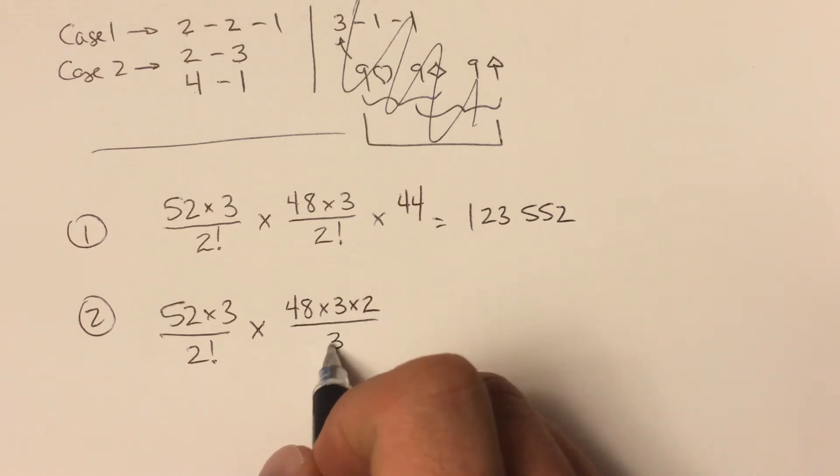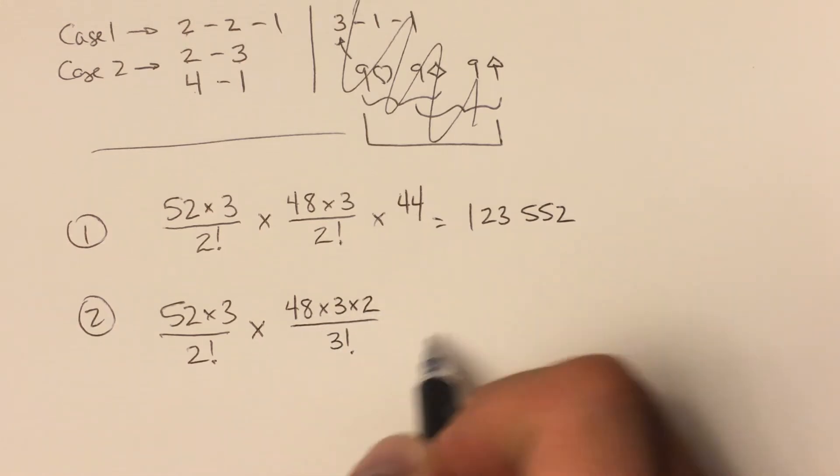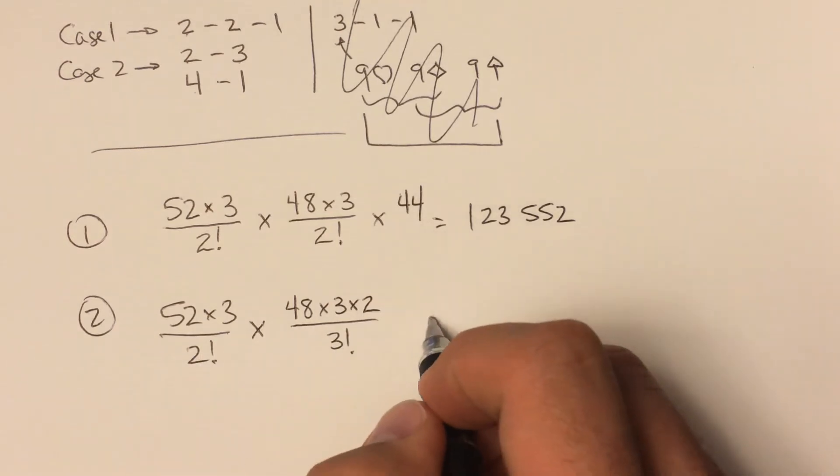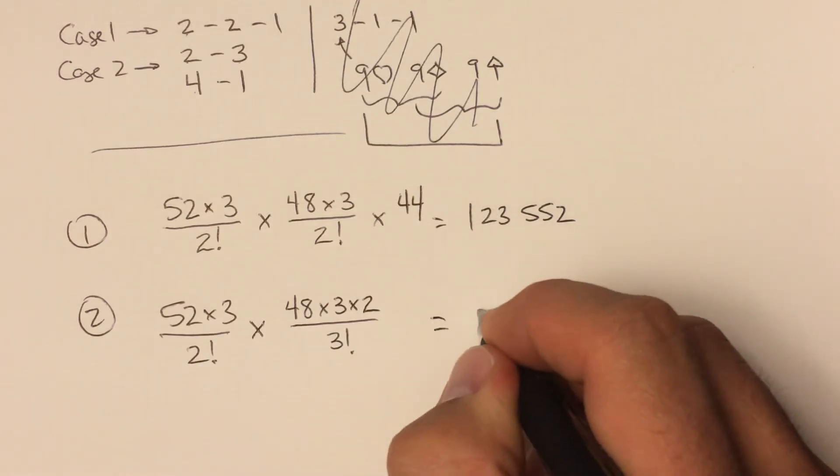And then I have to divide by the number of orders to still have selected these three cards, which is three factorial. And then I don't have any more cards—that's two cards and three cards already selected. Work that out...